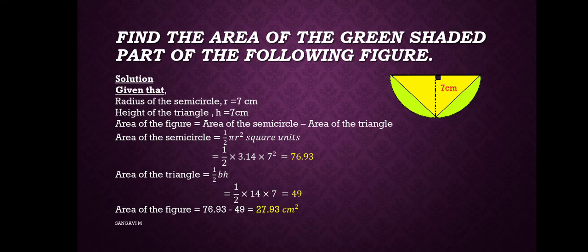Here we need to find the area of the shaded part. Before that, we need to find the area of the semicircle and area of the triangle. So the area of the shaded region equals the area of the semicircle minus the area of the triangle.